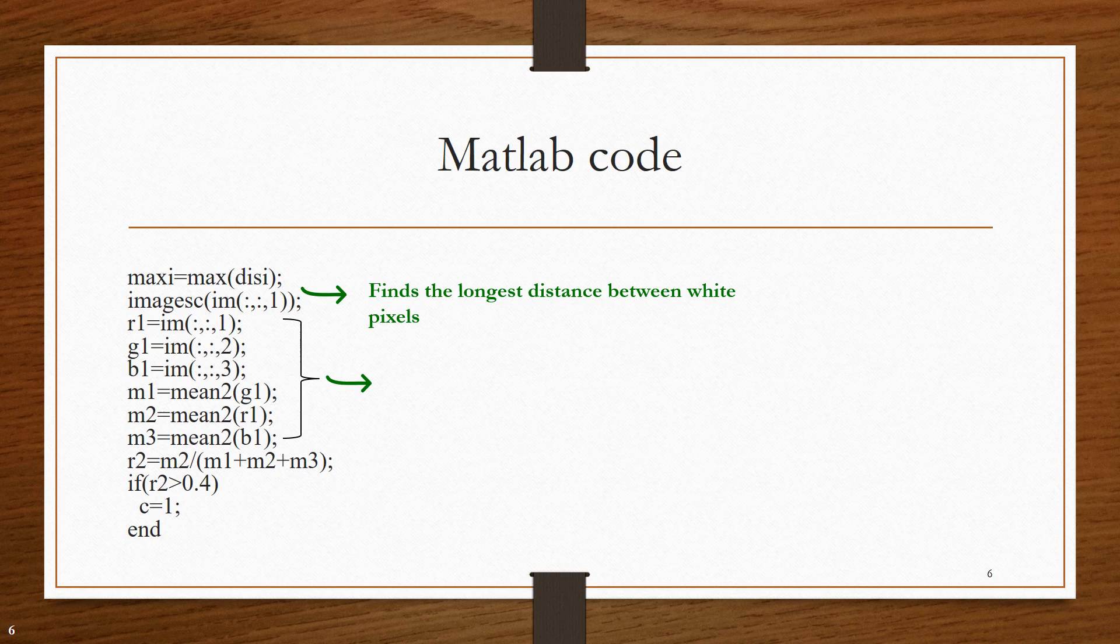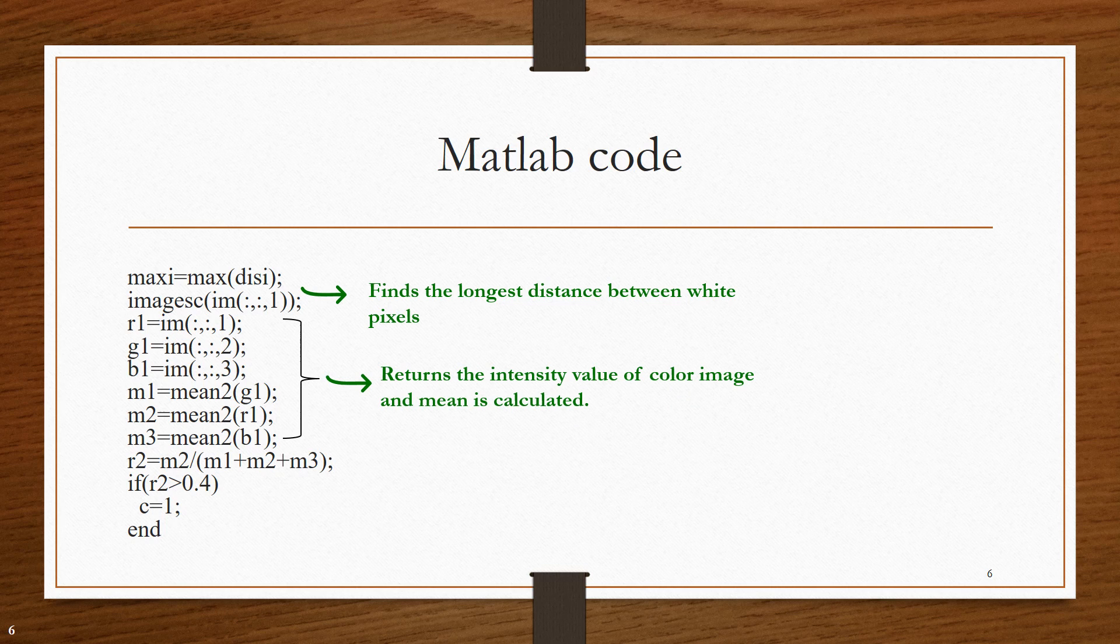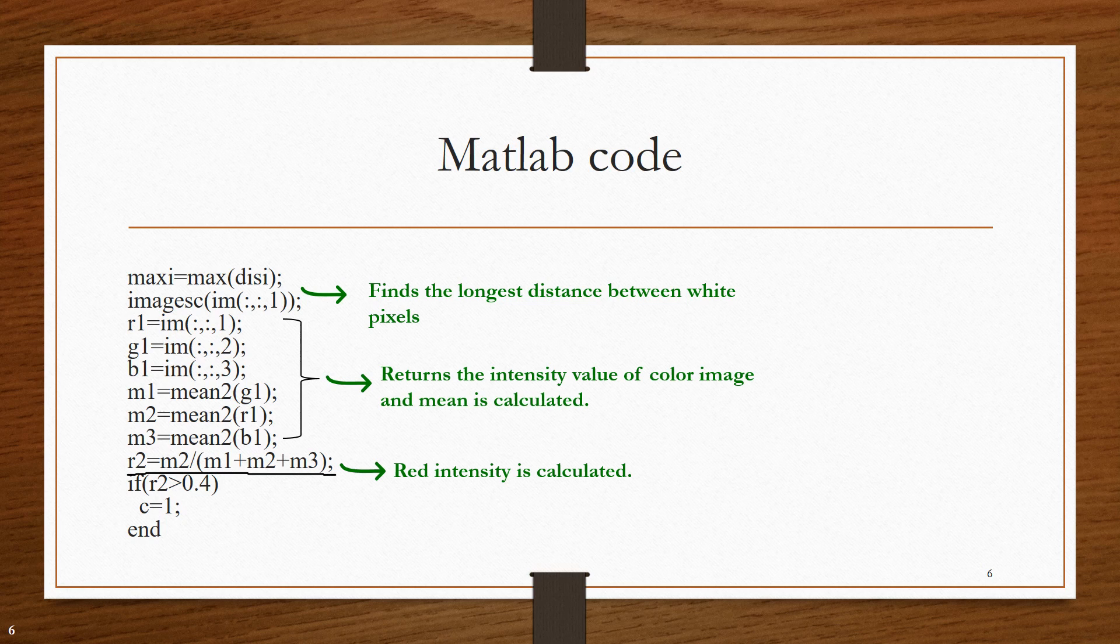Later, red, green, blue channel values of this color image is found and their mean is calculated. Then, the red intensity value is found using this formula: It is mean of red value divided by summation of other means.